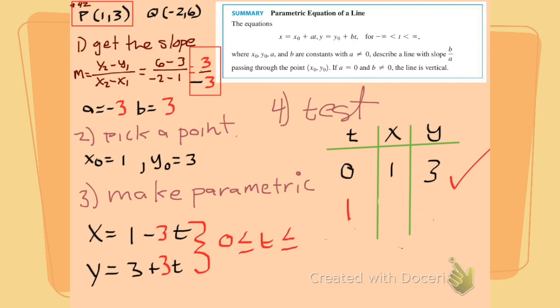When t is one and we put it into our parametric equation, we see that x is minus two and y is six. And that's sick because now we traverse our points on our line segment from zero to one.